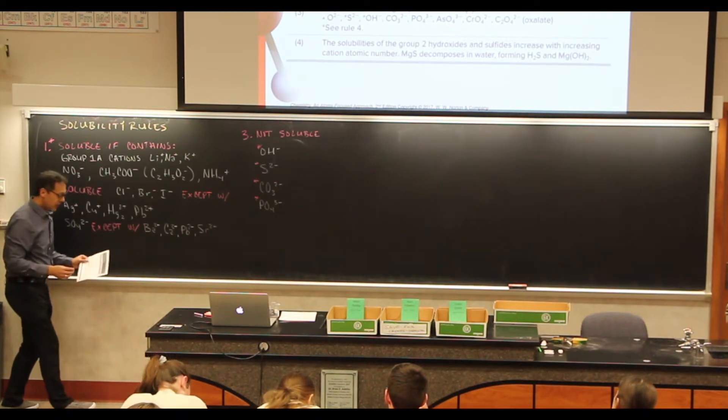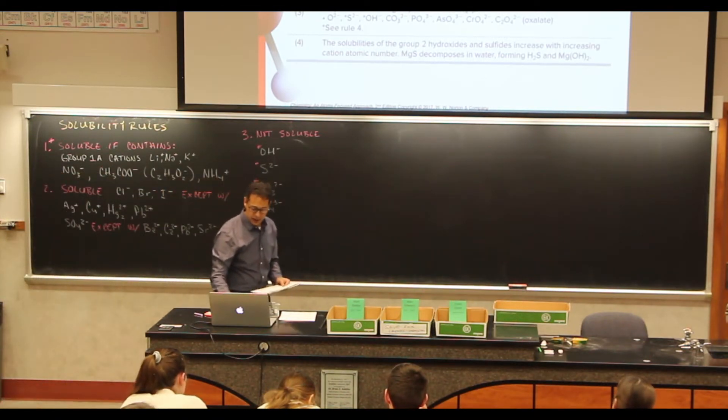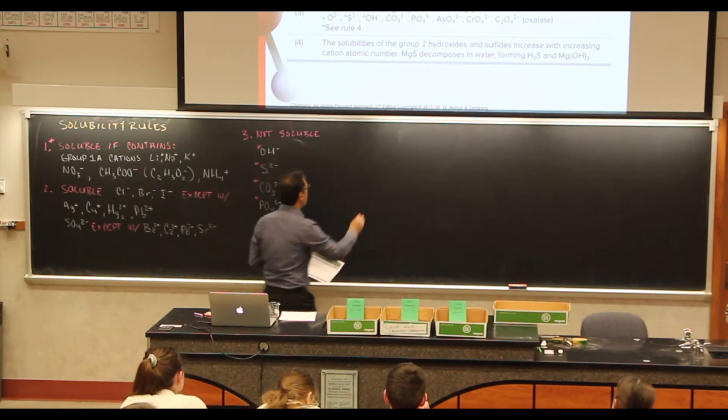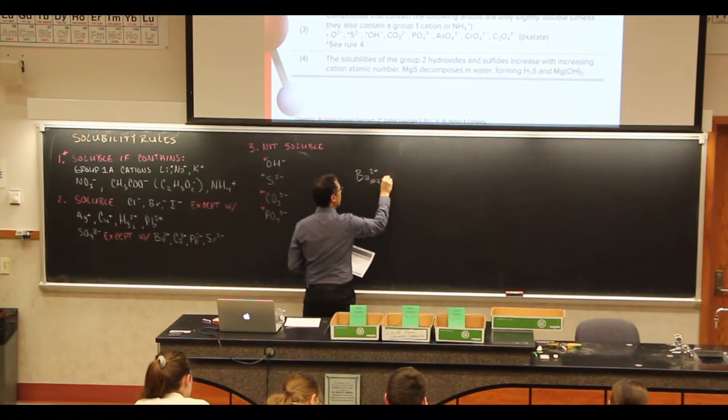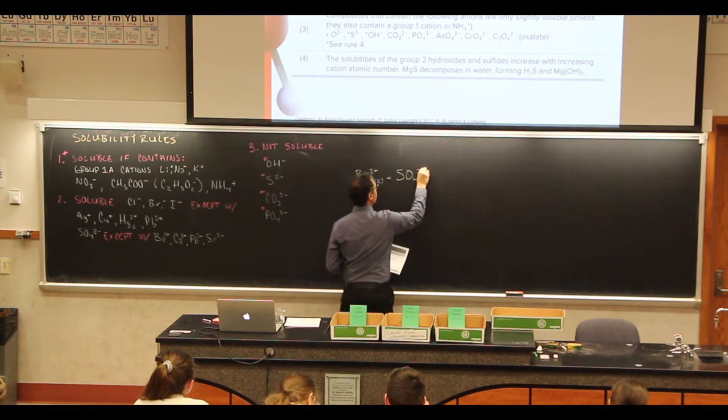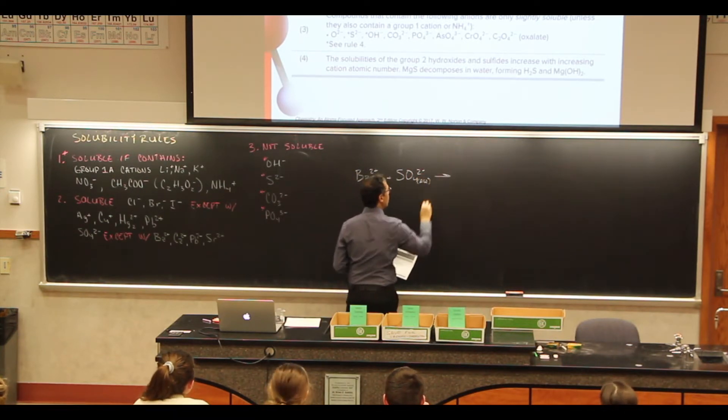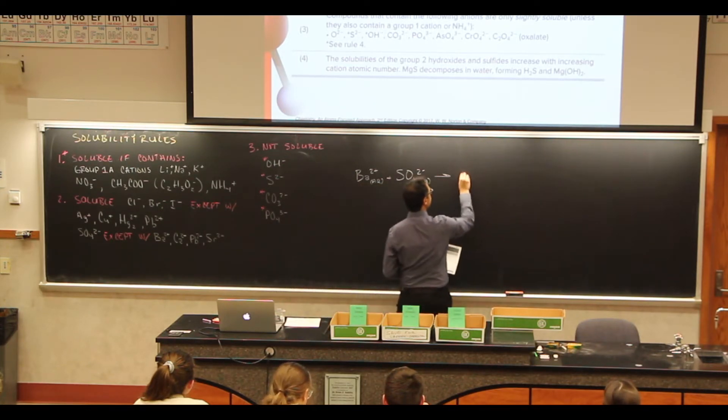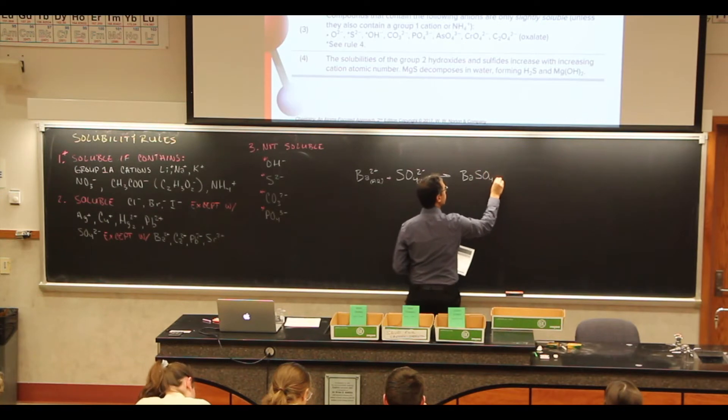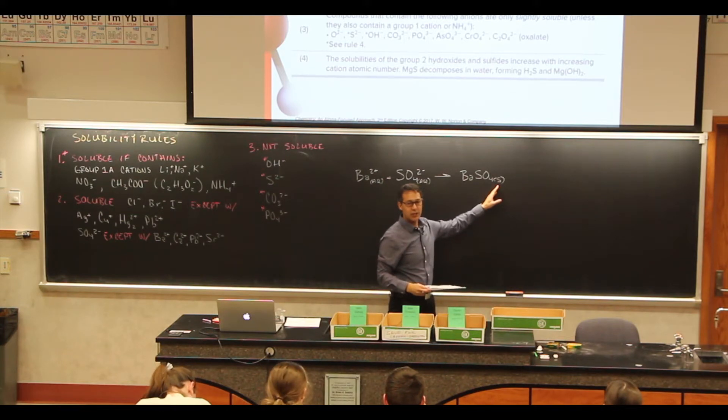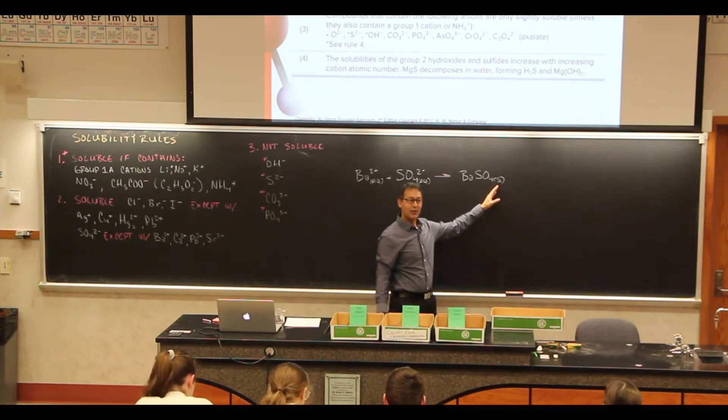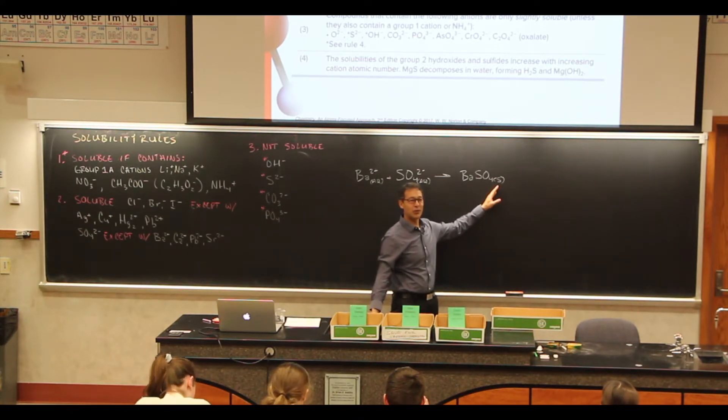Now, the last time we got together, we had a net ionic equation where we had barium aqueous and sulfate aqueous. And these combined together to give us barium sulfate. And I told you that the barium sulfate formed a precipitate. In other words, it was not soluble. And I didn't explain why. And I said, well, you'll just have to wait. That makes me valuable, right? Because that way, if somebody was going to knock me off in the next 24 hours, like, you know, I was really thinking about doing it. But we do need this bit of information, right? So I'm going to keep them around just a little bit longer.